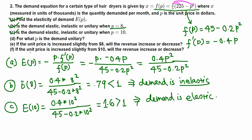For parts E and F: if the unit price is increased slightly from 10, will revenue increase or decrease? Since the demand is elastic at p = 10, increasing the price a little bit causes revenue to decrease. So the answer is: revenue decreases.